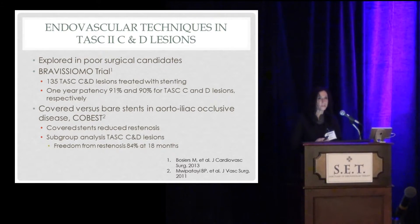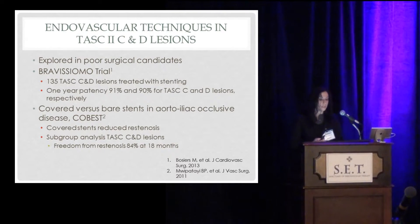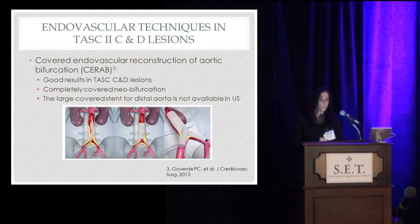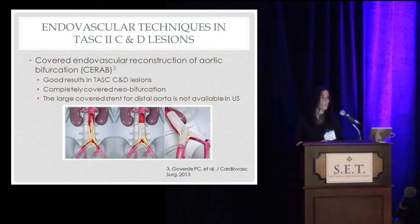The studies looking at TASC-C and D lesions initially focused on patients who were poor surgical candidates, such as the Bravissimo trial in 2013. They looked at C and D lesions and found very good one-year patency with kissing iliac stents at 90%. The COBEST trial also looked at TASC-C and D lesions and found an 84% freedom from re-stenosis at 18 months. And some work from Europe, rebuilding the aortic bifurcation entirely endovascularly, has also demonstrated very good results in both TASC-C and D lesions with minimal hospital stay and minimal morbidity.